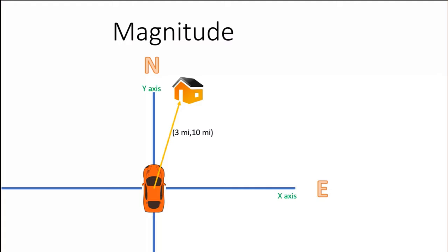For instance, you can tell me that my destination is three miles east and 10 miles north of where I am. But what if I want to know the distance it is from me if I take a straight path?